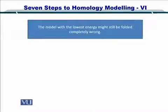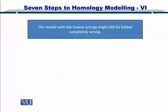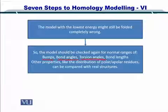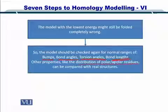So as I just mentioned, we now have a protein structure that we have predicted, which has the minimum energy and is therefore very stable. This was obtained by using molecular dynamic simulation. After predicting this structure, we need to evaluate it for bumps, bond angles, torsion angles, lengths of the bonds, and several other properties such as the distribution of polar and apolar residues.